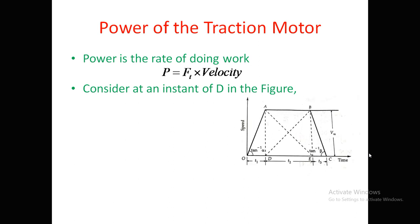This is the trapezoidal speed-time diagram. On the y-axis, speed is shown; on the x-axis, time is shown. The train starts from point O, reaches maximum speed at point A, maintains constant speed from A to B, then declines to zero at point C. Points D and E are also marked. Alpha is the acceleration and beta is the retardation.